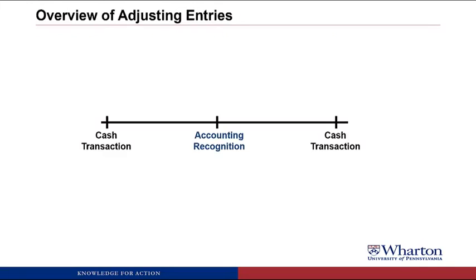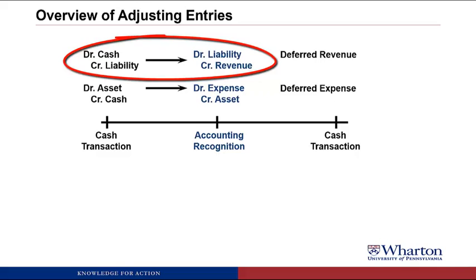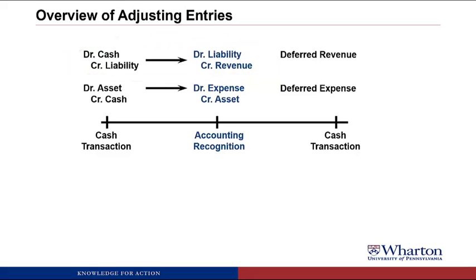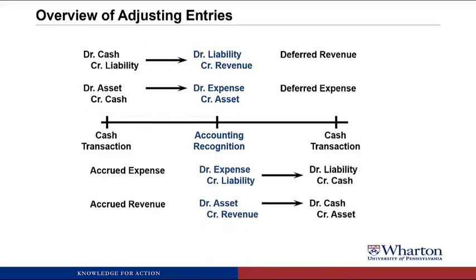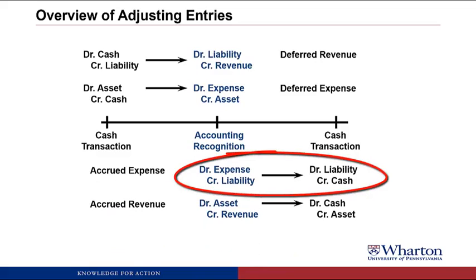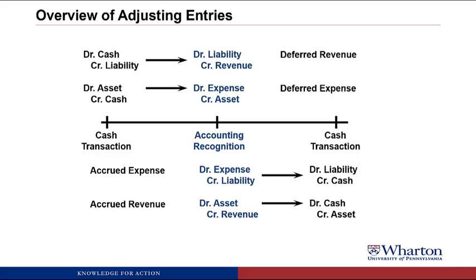Here's a graphical overview of adjusting entries. Think of a timeline where cash transactions happen at different times than revenue or expense recognition. Deferred revenue and deferred expense occur when cash comes first: receiving cash before booking revenue requires an unearned revenue liability to bridge the gap; paying cash before recording an expense requires a prepaid asset. Accrued expenses and accrued revenue occur when recognition comes first: recognizing an expense before paying cash requires a payable liability; booking revenue before receiving cash requires a receivable asset. All adjusting entries fit into one of these four categories.